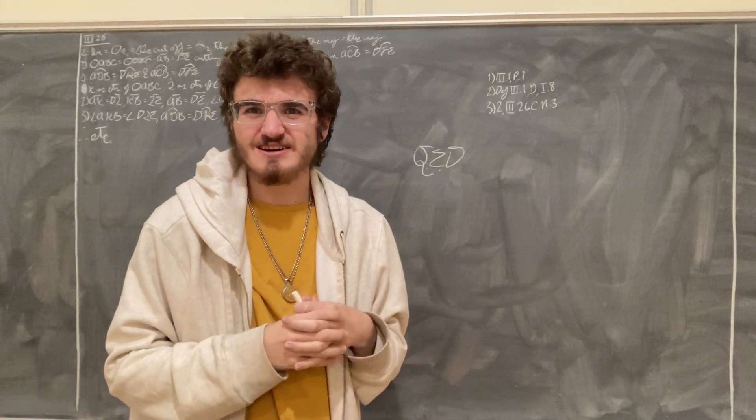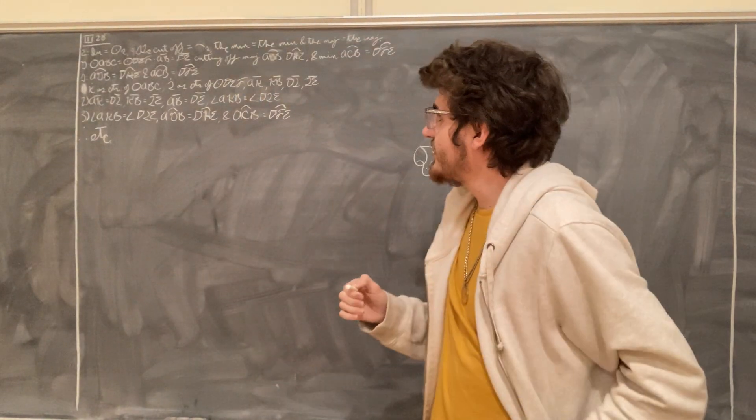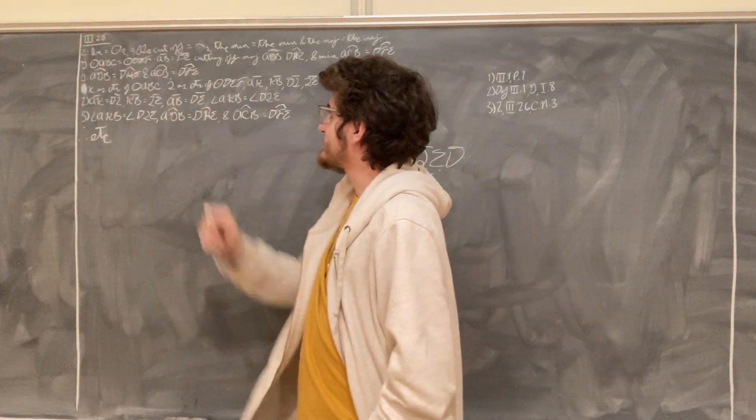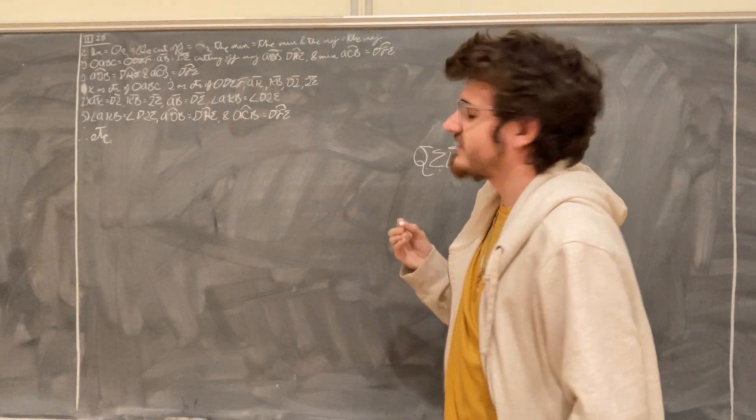Hello, this will be a demonstration of Proposition 28 from Book 3 of Euclid's Elements, which states that in equal circles, equal straight lines cut off equal arcs, the minor equal to the minor, and the major equal to the major.